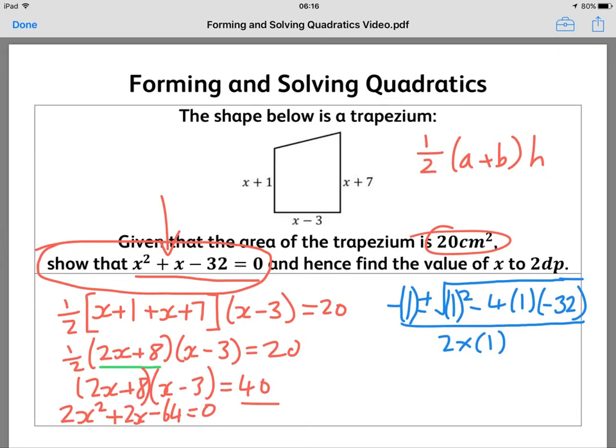It says to two decimal places, so X equals 5.18.